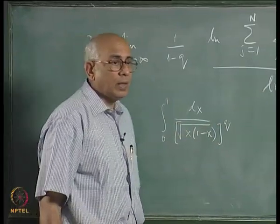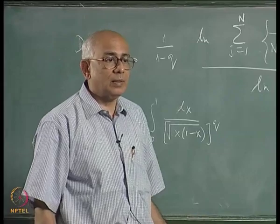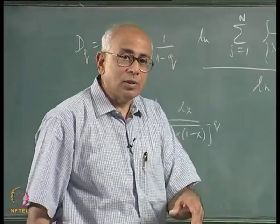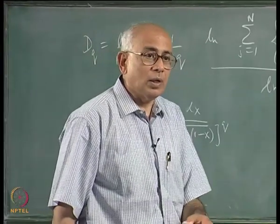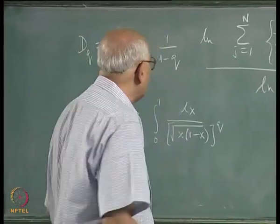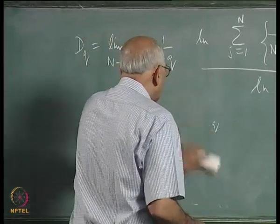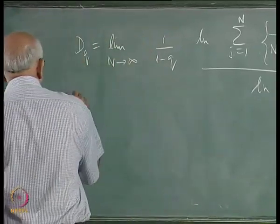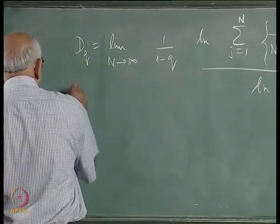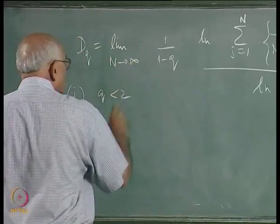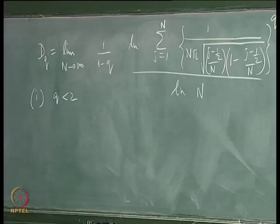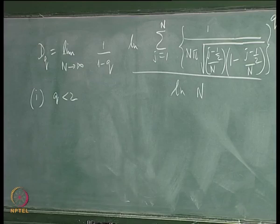The integral converges for q < 2 and diverges for q ≥ 2. This immediately means we must consider two cases separately: Case 1 where q < 2, and Case 2 where q ≥ 2.